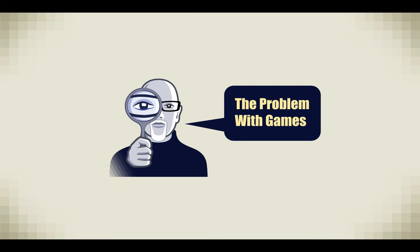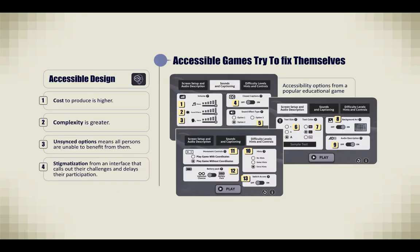The problem with games. Accessible games try to fix themselves. The cost to produce them is higher, the complexity is greater, and unseeked options mean all persons are unable to benefit from them. Stigmatization from an interface that calls out their challenges and delays their participation is also a problem. On the right are 13 individual control panels that a person with disabilities would need to adjust before they could start playing this popular educational game.